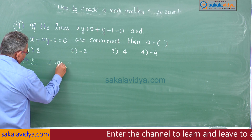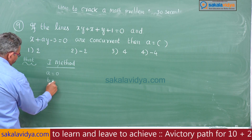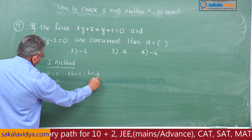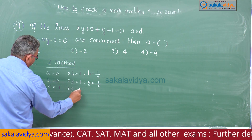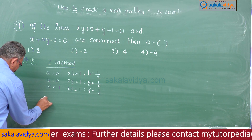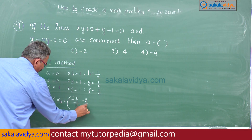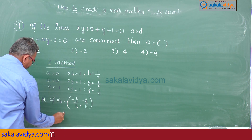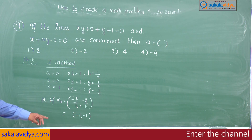First method: a = 0, b = 0 since the x² coefficient is 0. The constant c = 1, 2h = 1 so h = 1/2, 2g = 1 so g = 1/2, and 2f = 1 so f = 1/2. Using the point of intersection formula from the previous episode, the point of intersection is (-1, -1).